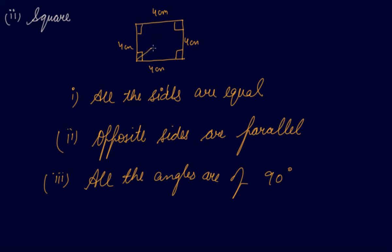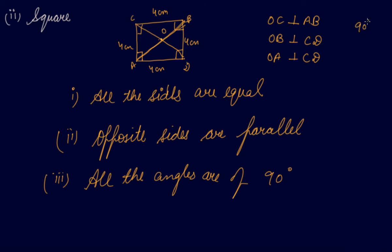If you draw the diagonals of a square, both diagonals are perpendicular to each other. For example, labeling the square ABCD with center O: OC is perpendicular to AB, OB is perpendicular to CD, OA is perpendicular to CD, and OD is perpendicular to AB. Perpendicular means a 90-degree angle on the line. These are the properties of a square.